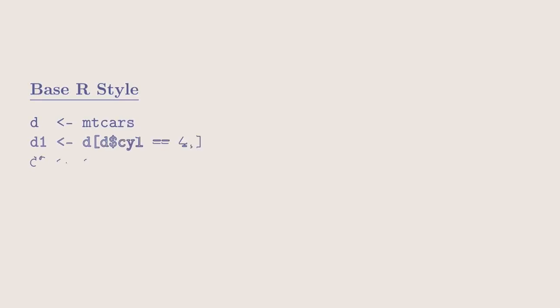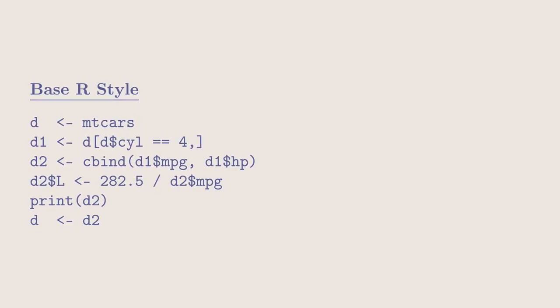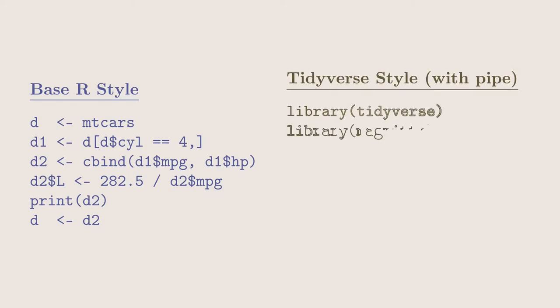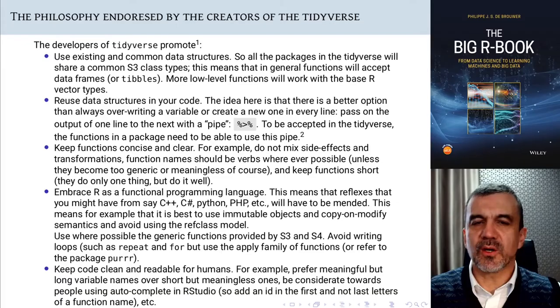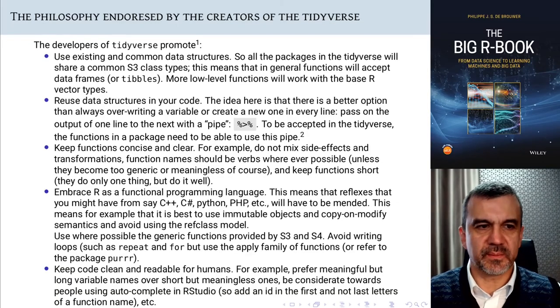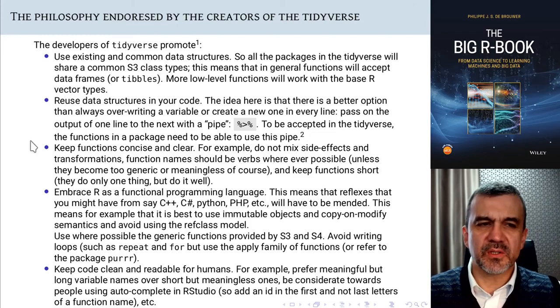The next thing, we will look into that later, is the piping command. That allows you to pass on data from one line to the other, without that passing on being too much visible and coming in the way of reading the code. Quite handy thing, but something to get used to.